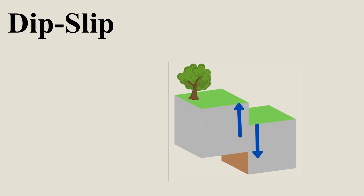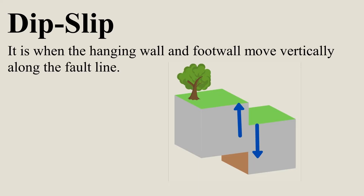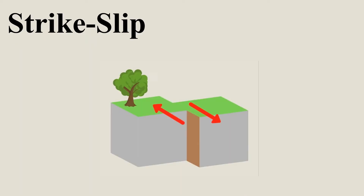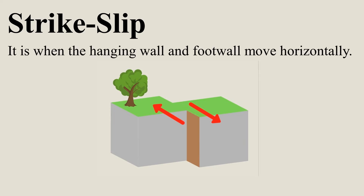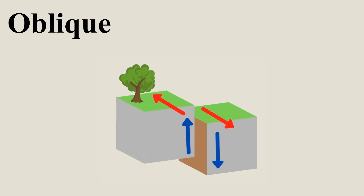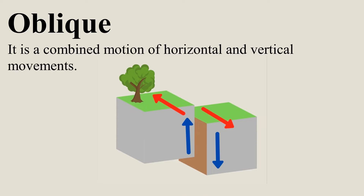Deep slip — it is when the hanging wall and the foot wall move vertically along the fault line. Strike slip — it is when the hanging wall and the foot wall move horizontally. Oblique — it is a combined motion of horizontal and vertical movements.